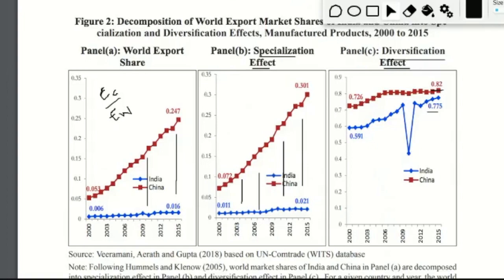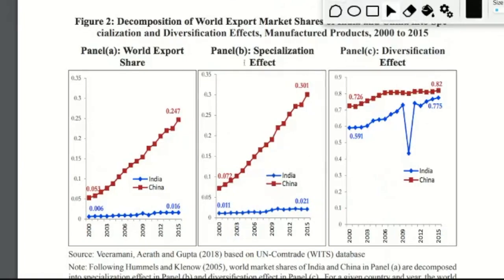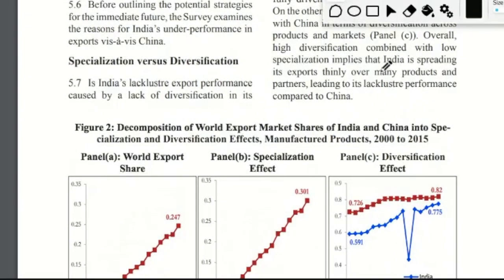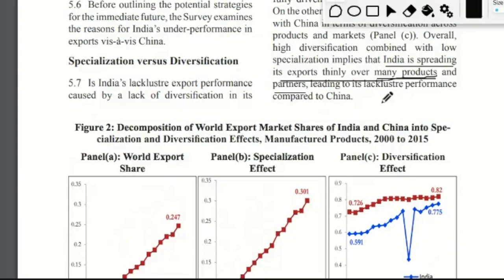The specialization effect means exporting in a limited set of goods where you have comparative advantage. India is not focused enough on specialization, as shown by the charts. What India is actually doing is spreading its exports over many products and many trading partners. Instead of streamlining exports to a limited set of goods and countries, India is more involved in diversification — exporting different commodities to different partners but in smaller amounts per partner.